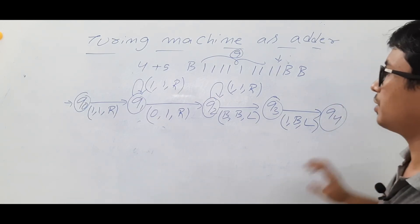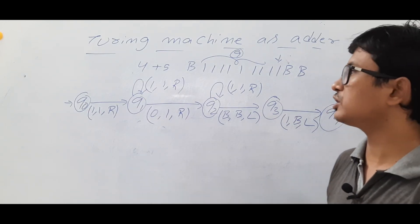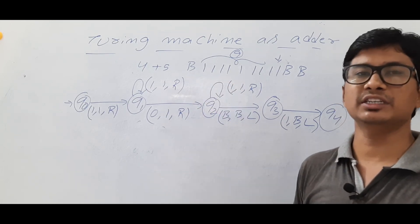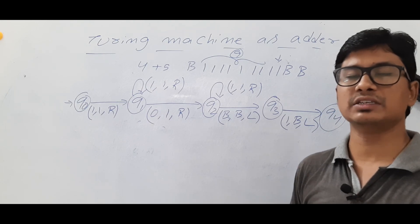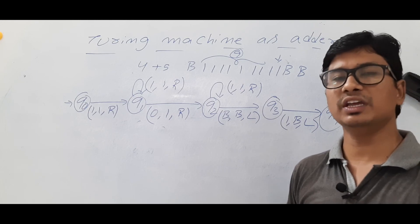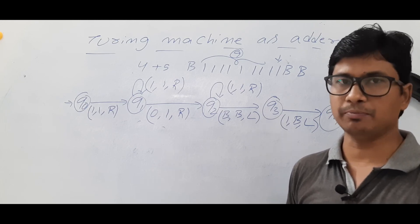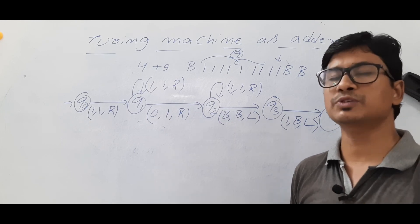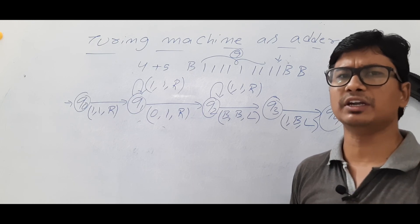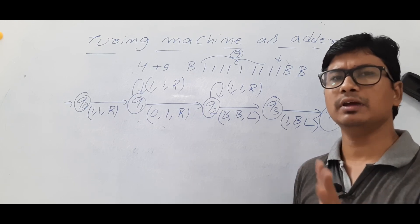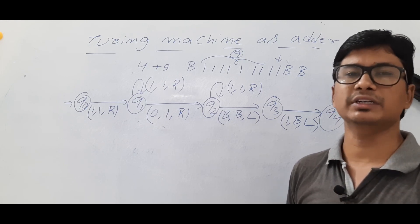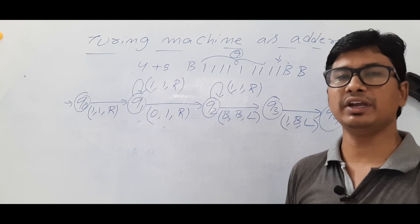This is a Turing machine. I hope you have understood how I constructed the Turing machine for performing unary addition. If you have any doubts, feel free to ask in the comment section — I will clear your doubts in less than 24 hours. If you like my videos, please press the like button, share with your friends, and subscribe to my channel. Also press the bell button for regular updates. Thank you so much for watching, have a nice day.